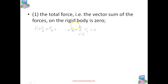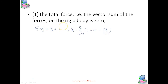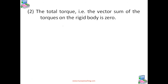If the total force on the body is zero, then the total linear momentum of the body does not change with time. This gives the condition for translational equilibrium of the body. And for the second case, the vector sum of the torques on the rigid body must also be zero.